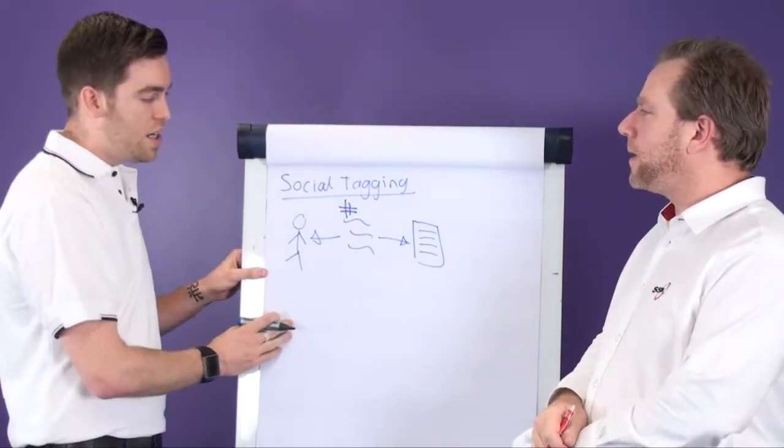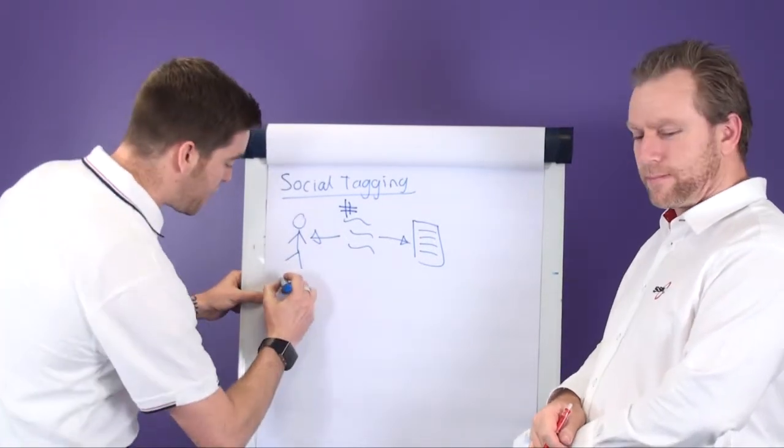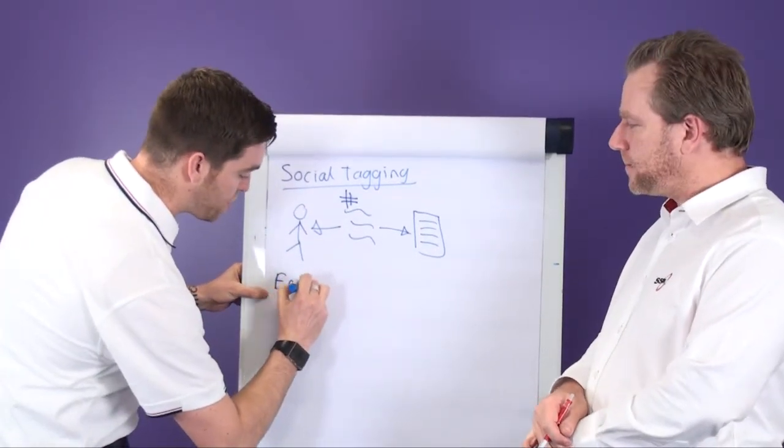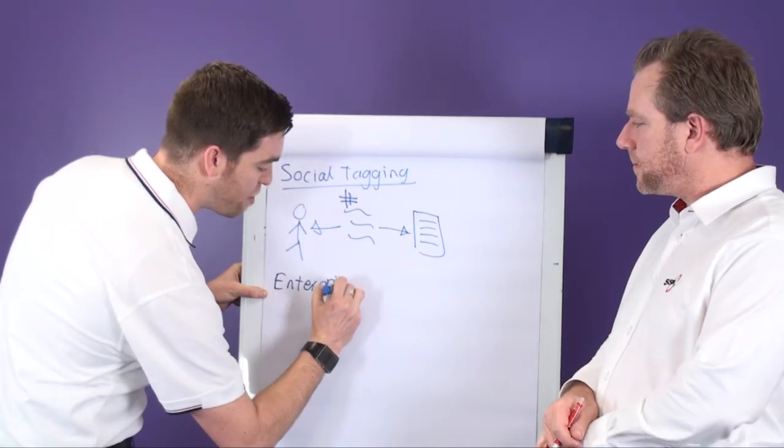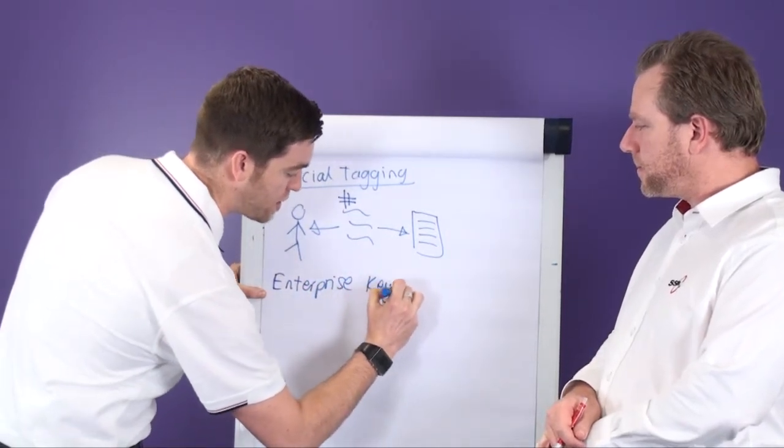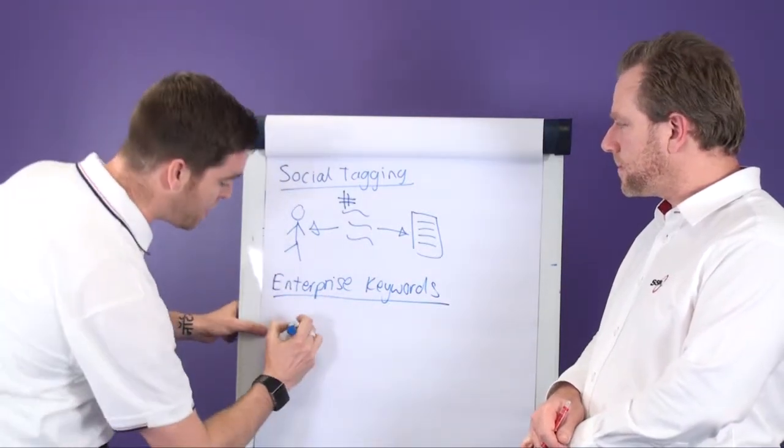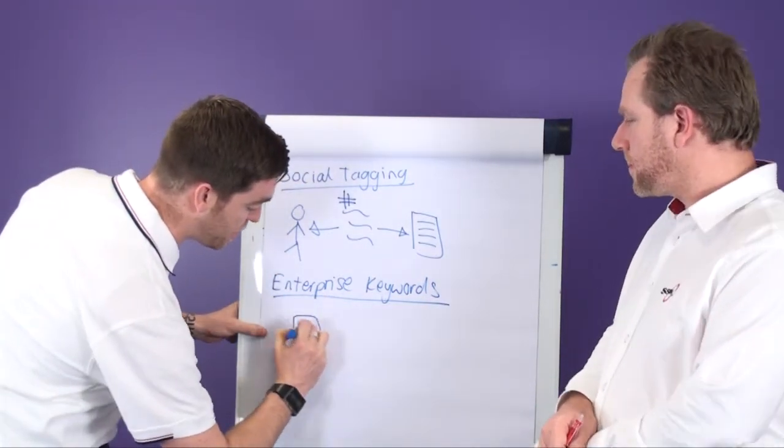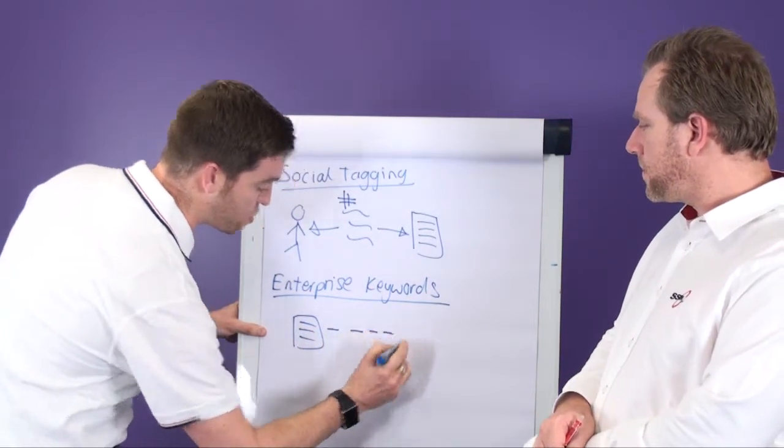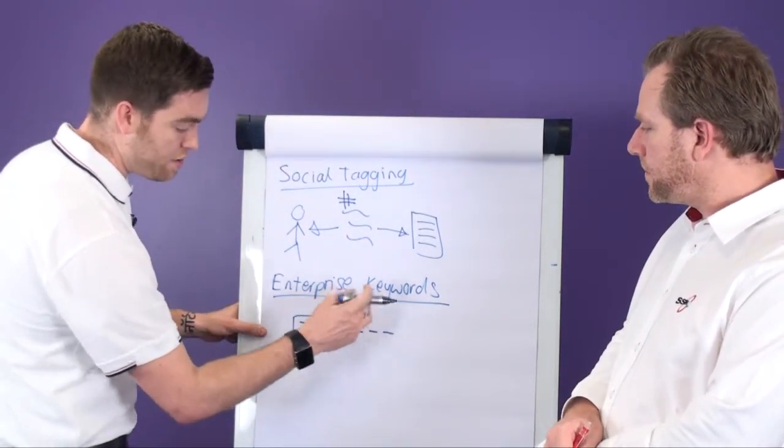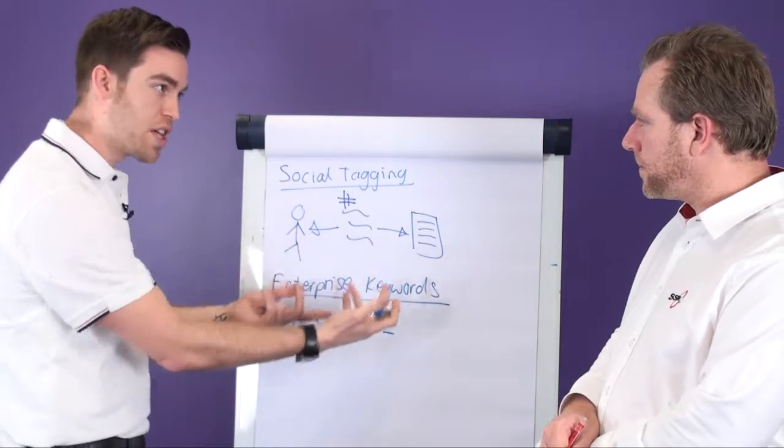All right, what's our next choice? Next choice is what we call enterprise keywords. So within any particular list or library, what we can do is enable the enterprise keywords option. And what that allows you to do is actually attach properties to the document in a specifically created column called enterprise keywords.